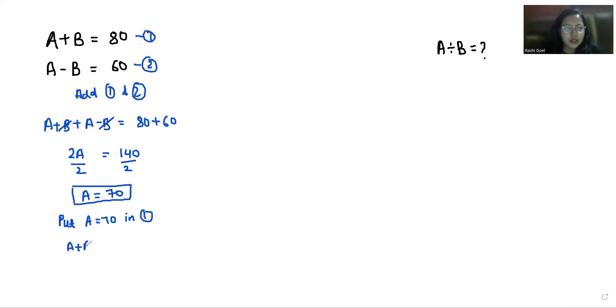So a plus b equals 80. So 70 plus b equals 80. So b equals 80 minus 70 which is 10.